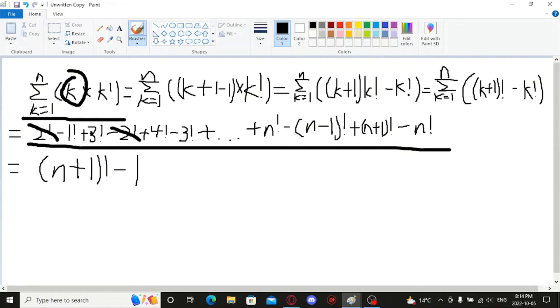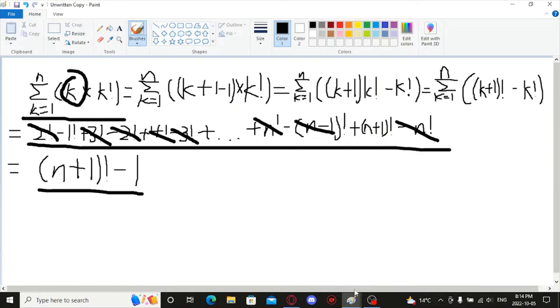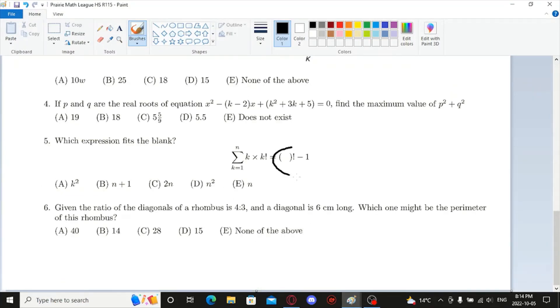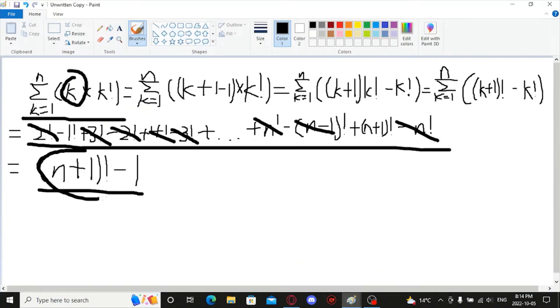We take out these 2, these and this, until eventually, we are left with only n plus 1 factorial and minus 1 factorial. Which, if you recall in the original thing, we have had this. And in this blank, fits n plus 1 factorial. Because, in here, this is n plus 1.